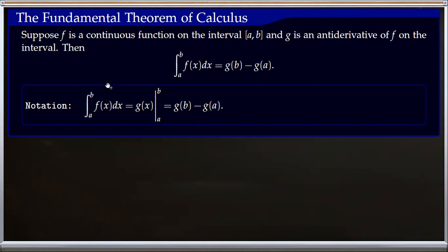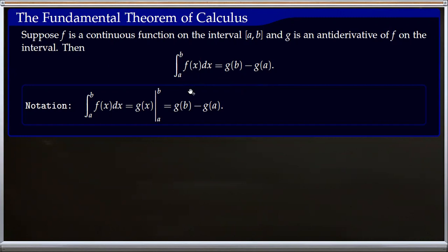The fundamental theorem of calculus can be stated like this. Suppose f is a continuous function on the interval [a, b] and g is an antiderivative of f on the interval. Then the integral from a to b of f is simply g(b) minus g(a). Basically we find the antiderivative of the given function, evaluate at the two limits of integration, and take the difference.